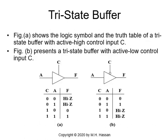The Tri-State Buffer is very simple. The symbolic representation and truth table show the logic symbol with input A, output F, and control signal C. The control signal could be active high as shown in figure A, or active low with a small circle as shown in figure B. If the control signal is zero in figure A, it means the control signal is inactive — whatever the value of A, F will be open circuit, high impedance, high Z.